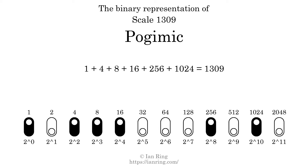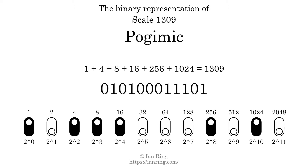The scale number not only enumerates the scale with a unique index, but it also literally describes the tonal content of the scale, represented as a binary number in base 2. The scale number is 0 1 0 1 0 0 0 0 0 1 1 1 0 1.